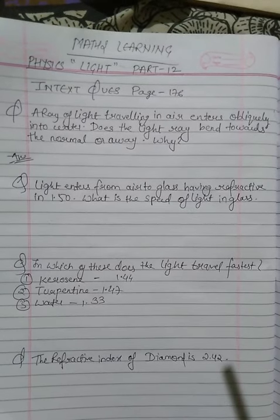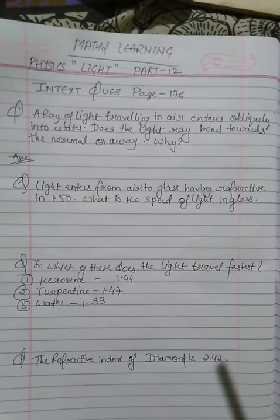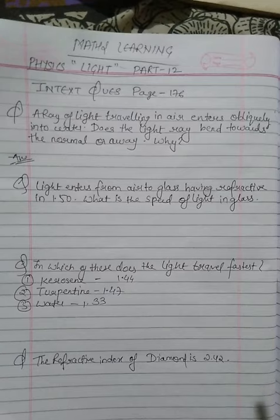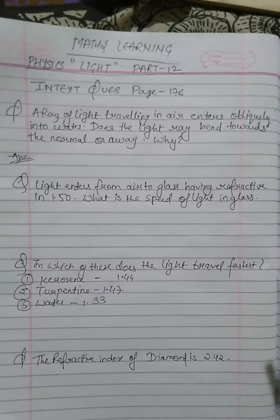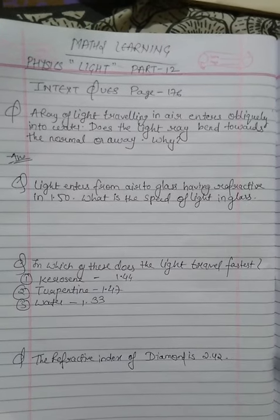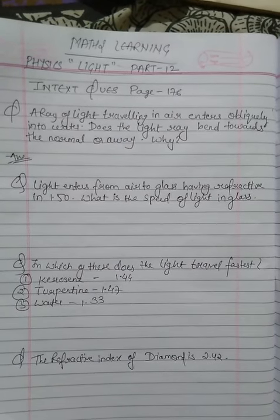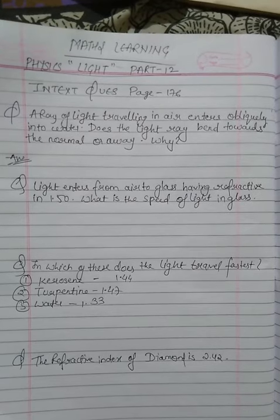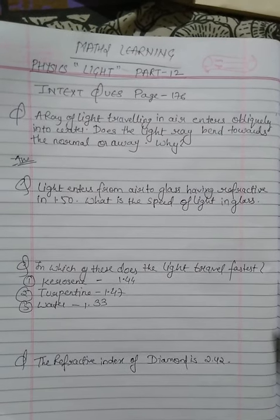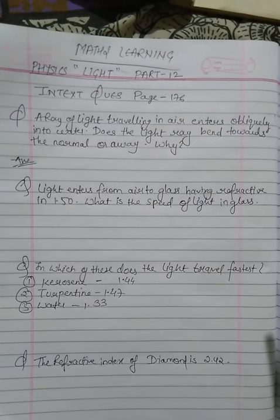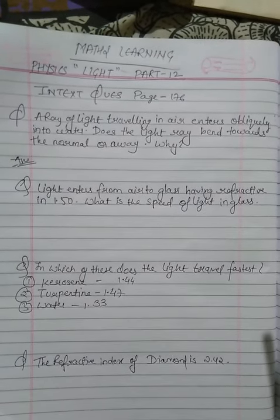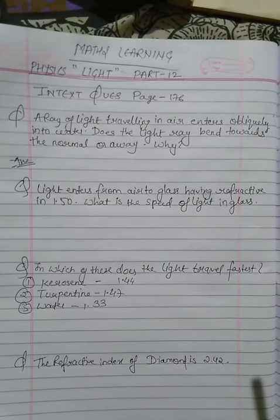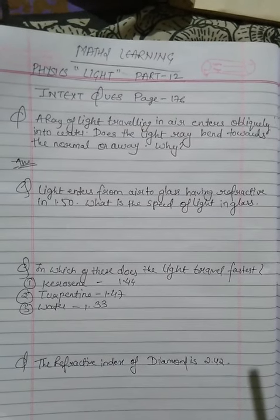When a light ray travels from air, which is a rarer medium, to water or glass, which is a denser medium, the ray of light bends towards the normal. Why? Because the speed of light in air is more than the speed of light in water.